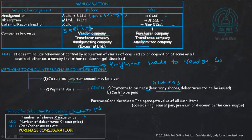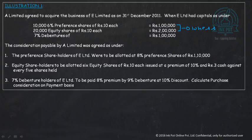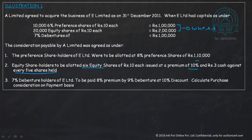Let us take an example. A Limited agreed to acquire the business of E Limited as on 31st December 2011. E Limited has 10,000 6% preference shares of ₹10 each and 20,000 equity shares of ₹10 each. Remember, these two are the owners of the company and purchase consideration is calculated from these. Preference shareholders of E Limited were to be allotted 8% preference shares of ₹1,10,000. For equity shares, 20,000 equity shares require allotment of six equity shares of ₹10 each at a premium of 10%, and ₹3 cash against every five shares — so 5 shares get 6 shares, meaning 24,000 equity shares at 10% premium.